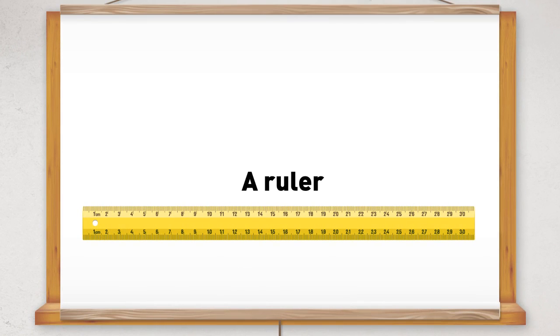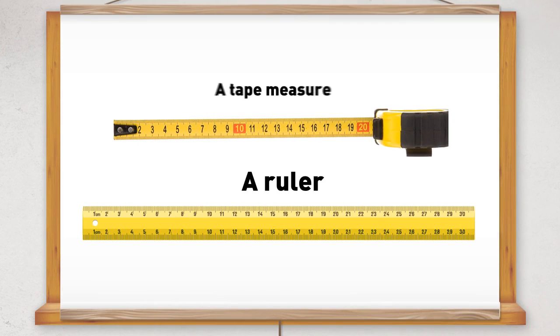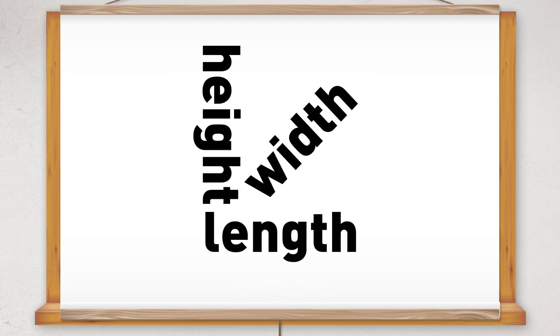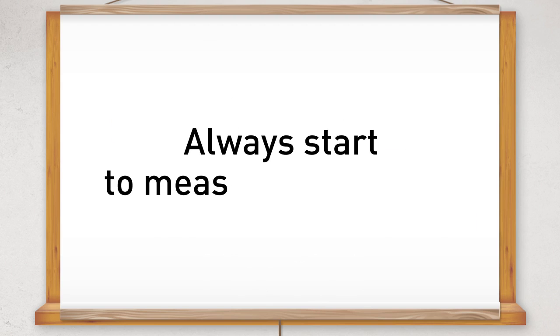This is a ruler and this is a tape measure. Both can be used to measure the length, width or height of something. Always start to measure from zero.